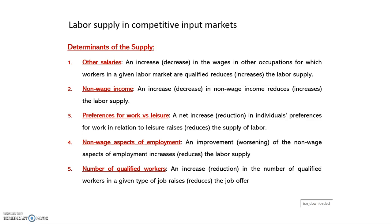The fourth determinant is non-wage aspects of employment. An improvement in non-wage aspects of employment is going to increase the labor supply. For example, if companies in a sector begin to offer benefits such as private health insurance, more people would like to work in that sector, leading to an increase in labor supply.